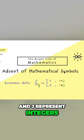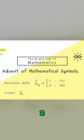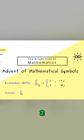For example, delta 1,2 stands for the number 0, while delta 5,5 stands for the number 1.